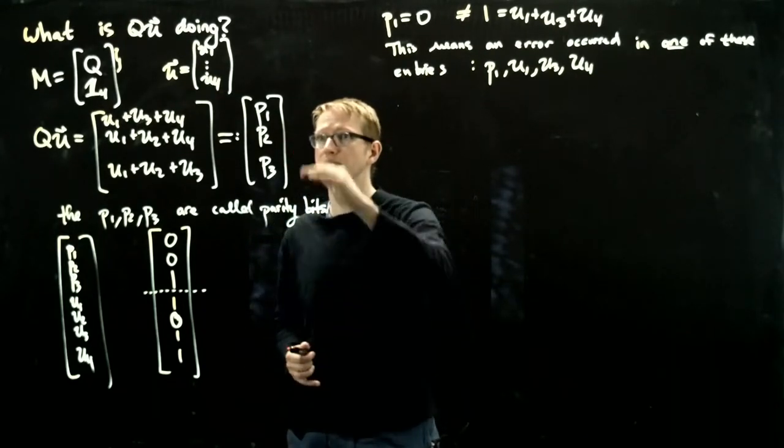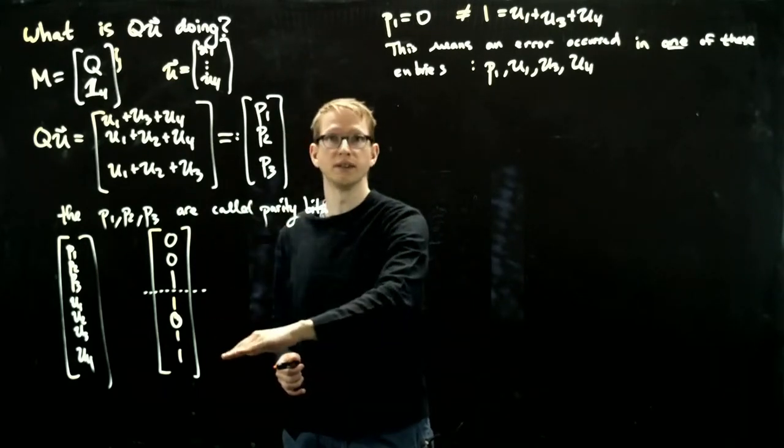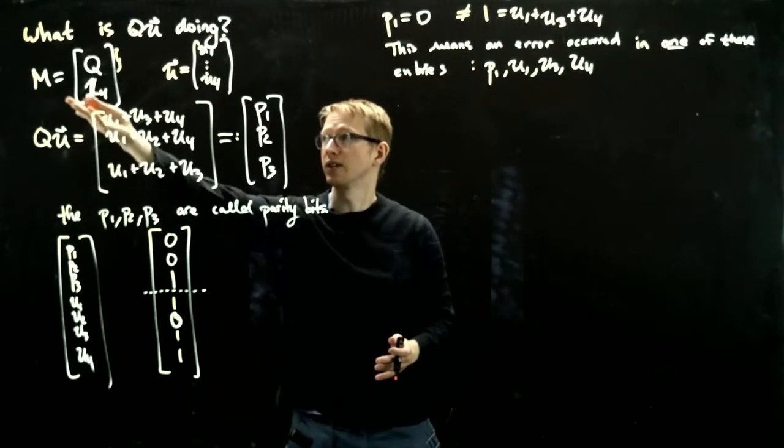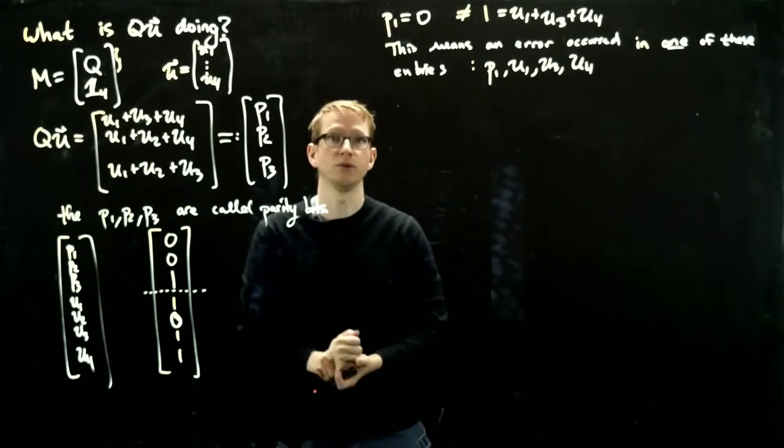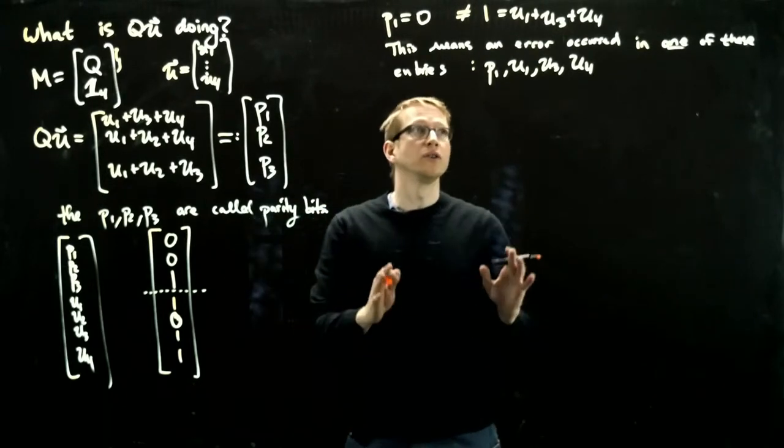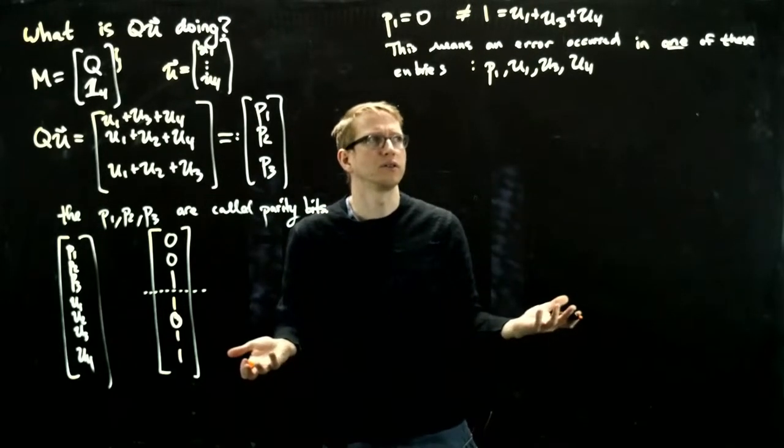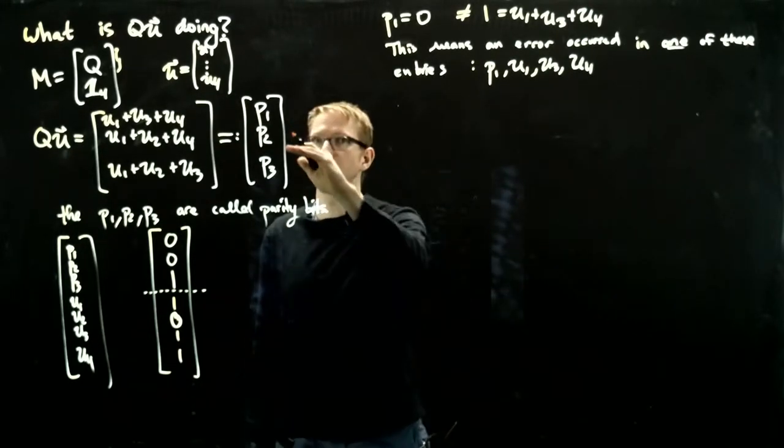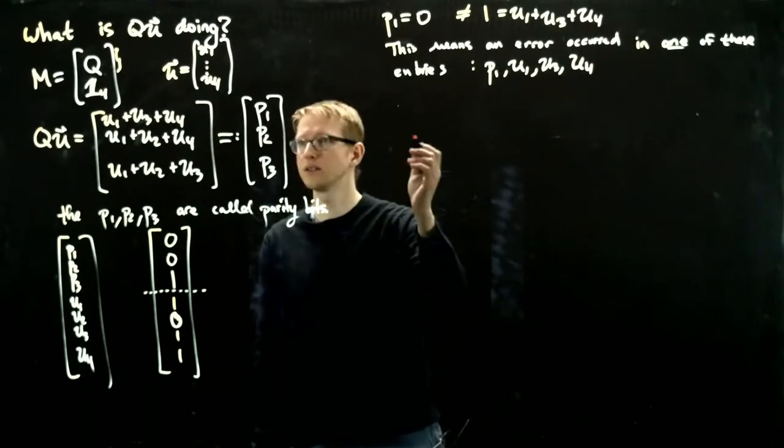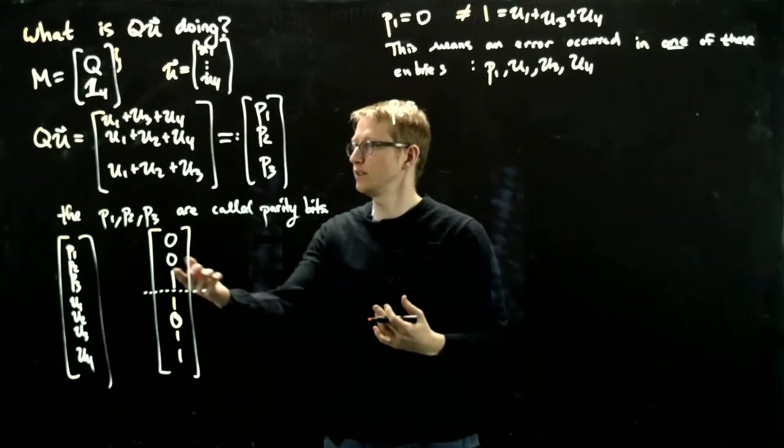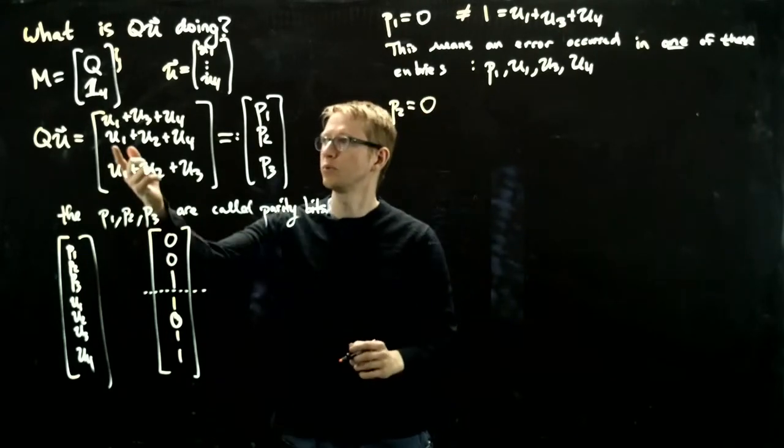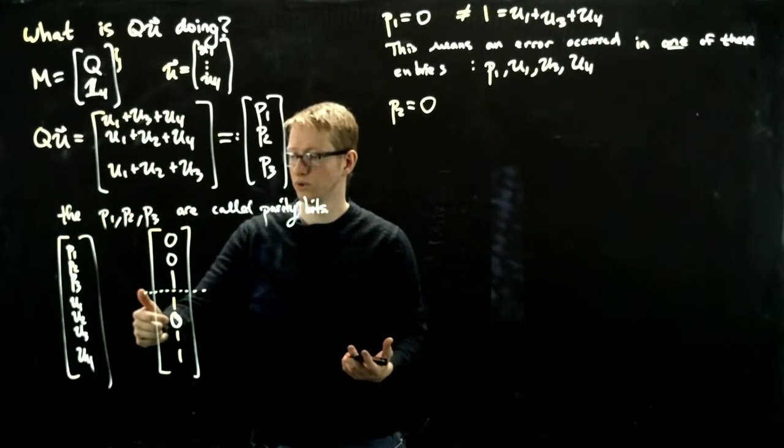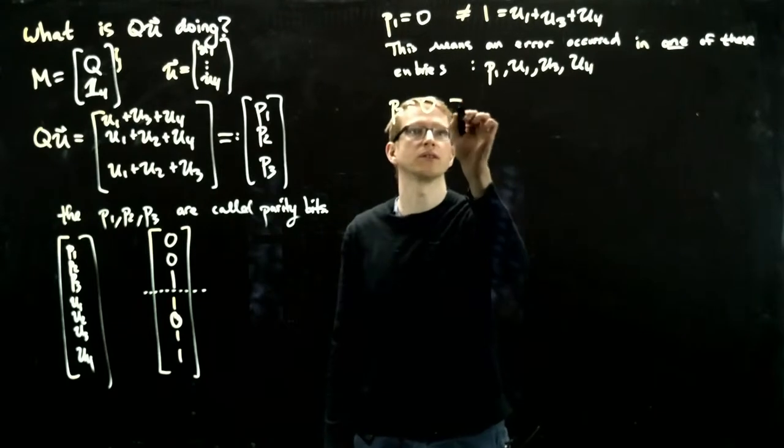So that doesn't exactly tell us which of the errors it is yet. Is it p1, u1, u3, or u4? For that, we'll look at the other parity bits. So let's look at p2. The vector we see says p2 is zero. Is that consistent with this formula, u1 plus u2 plus u4? u1 plus u2 plus u4 is zero, so that actually is consistent.